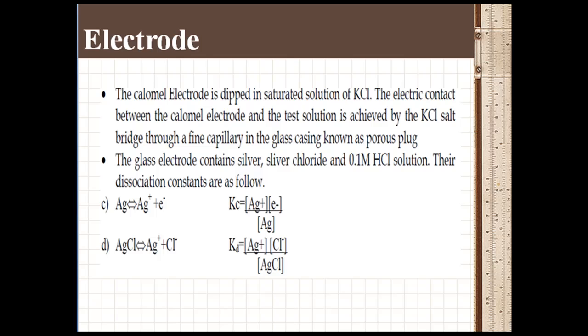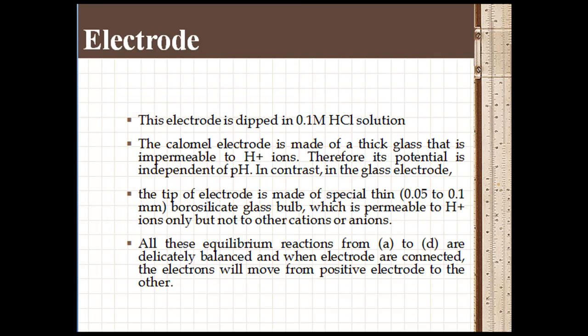The calomel electrode is made up of thick glass that is impermeable to hydrogen ions. Therefore, its potential is independent of pH. In contrast, in the glass electrode, the tip is made up of special thin borosilicate glass bulb which is permeable to hydrogen ions only, but not to other cations or anions.